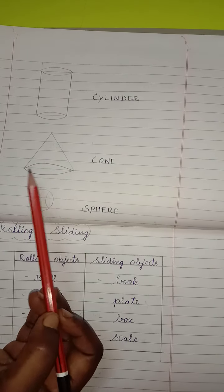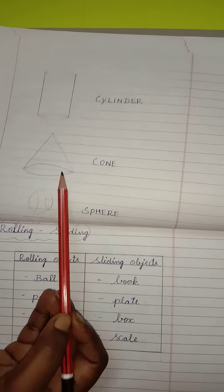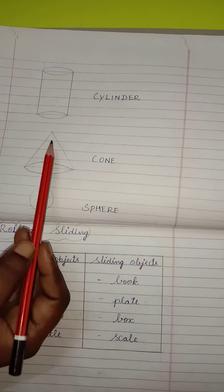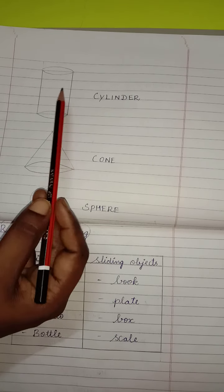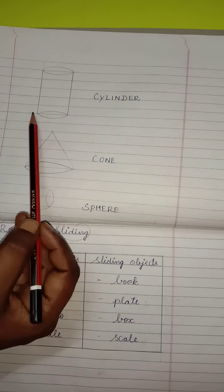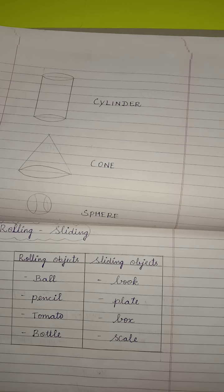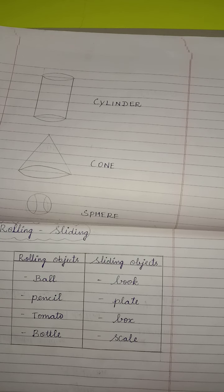Cone also, both, it can slide and roll. Because it has a flat surface and round surface also. Here also, cylinder also has flat surface and round surface. So, cylinder and cone can both slide and roll.